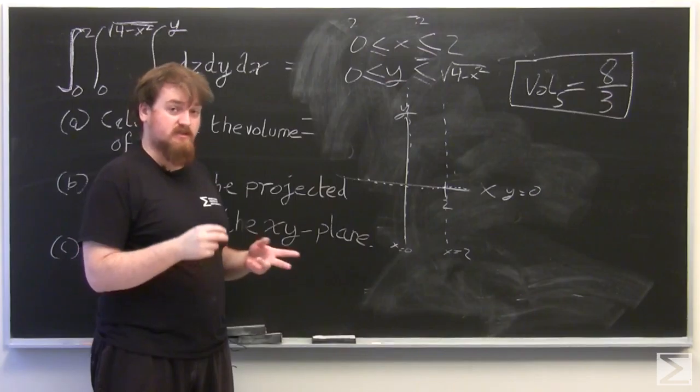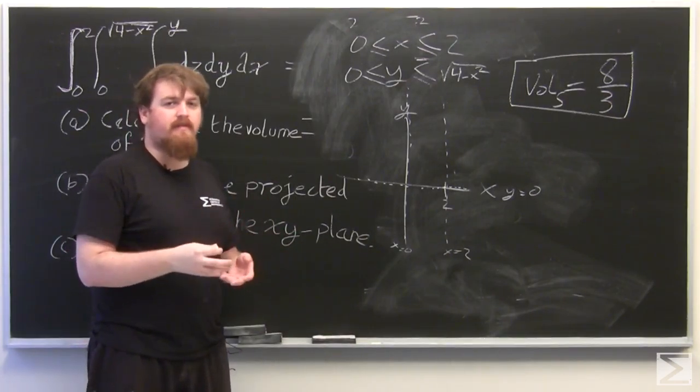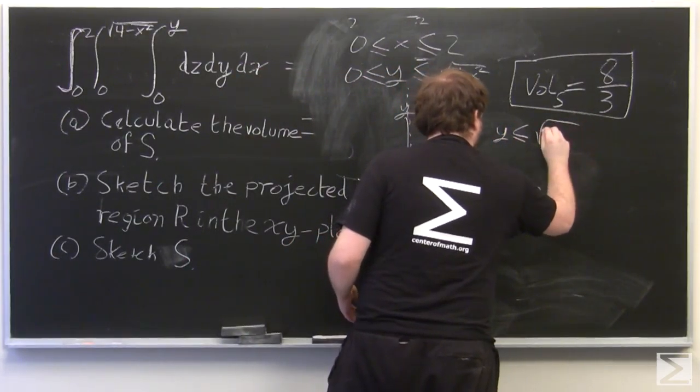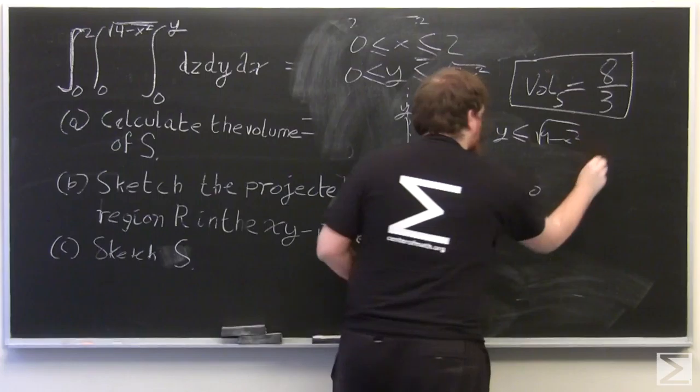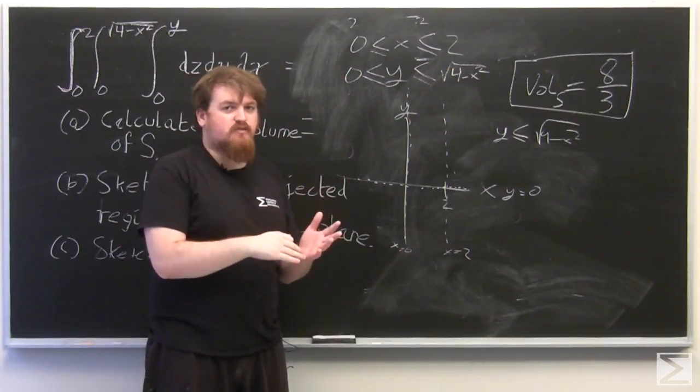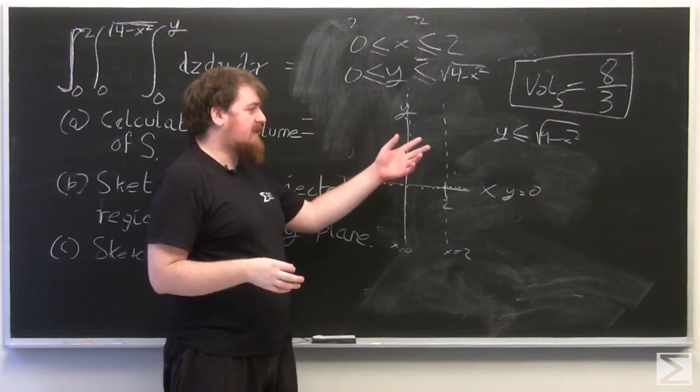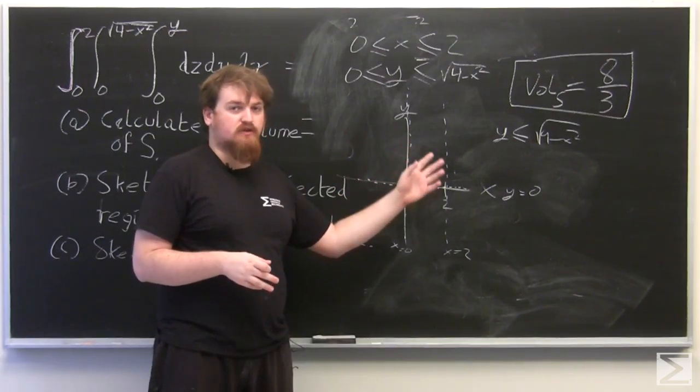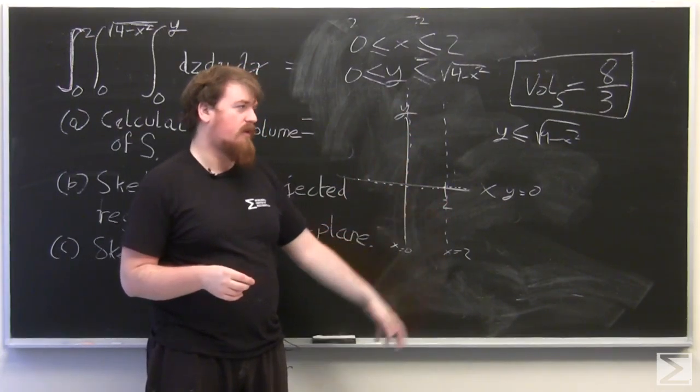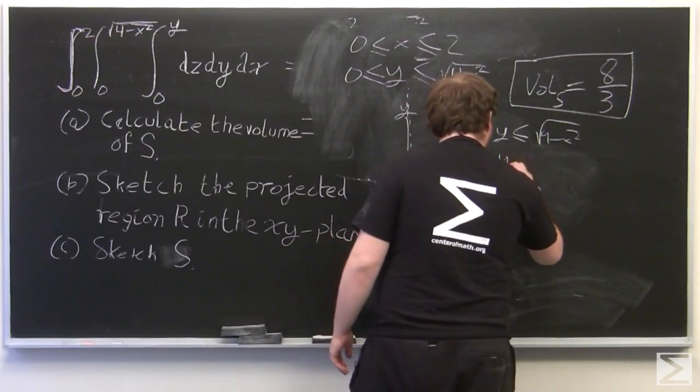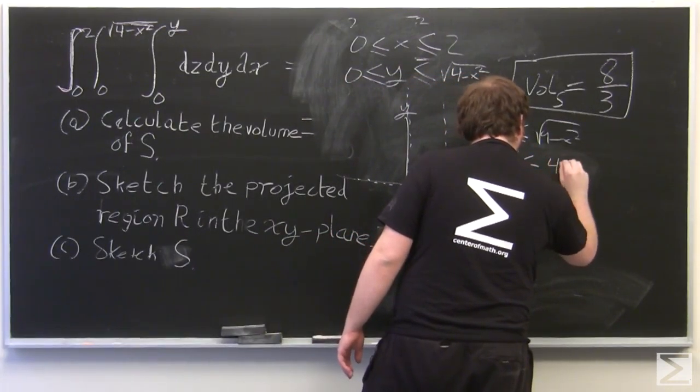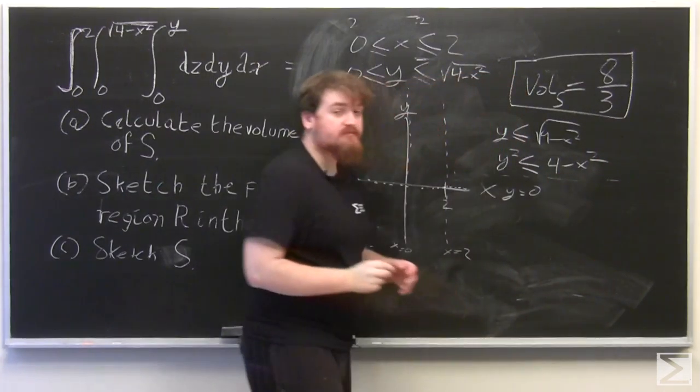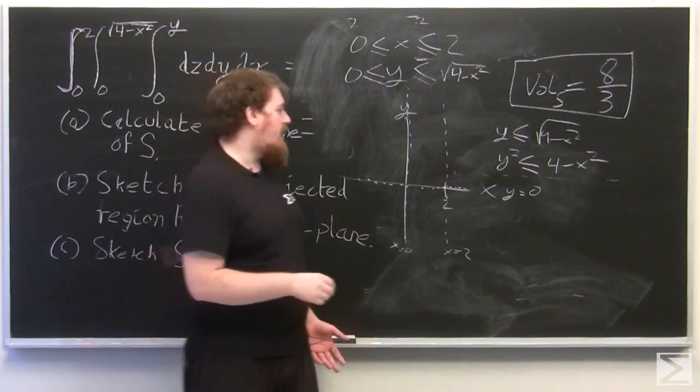If we look at y is less than or equal to square root of 4 minus x squared, we can manipulate this to get something which looks more familiar to us. Because the function that takes x squared to x is strictly increasing, if y is less than square root of 4 minus x squared, then the square of y is going to be less than 4 minus x squared. So this becomes y squared plus x squared is less than or equal to 4, and then we can add x squared to both sides.